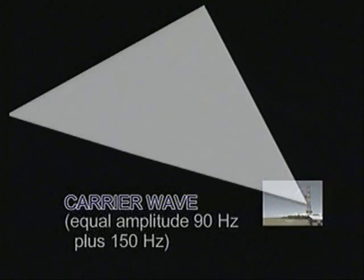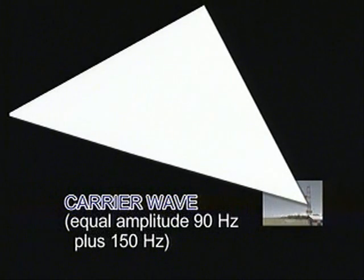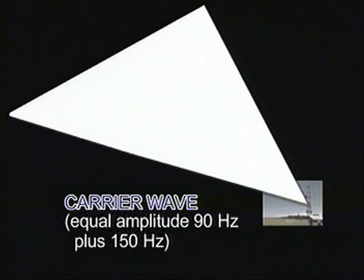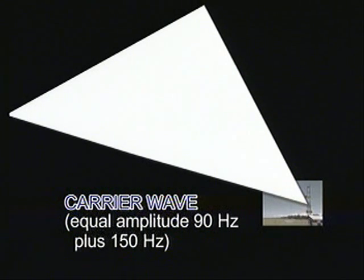The lower aerial radiates the carrier wave. This carrier is formed by a UHF signal and is modulated with two other frequencies of 90 Hz and 150 Hz. The resulting signal contains equal amplitude 90 and 150 Hz modulations.